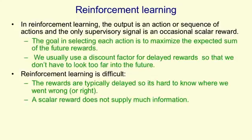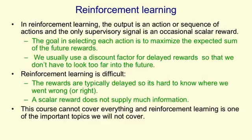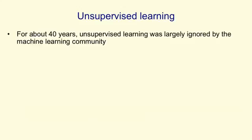Typically in reinforcement learning, you're trying to learn dozens of parameters or maybe a thousand parameters, but not millions. In this course we're not going to cover reinforcement learning even though it's an important topic. Unsupervised learning is going to be covered in the second half of the course. For about 40 years, the machine learning community basically ignored unsupervised learning except for one very limited form called clustering.